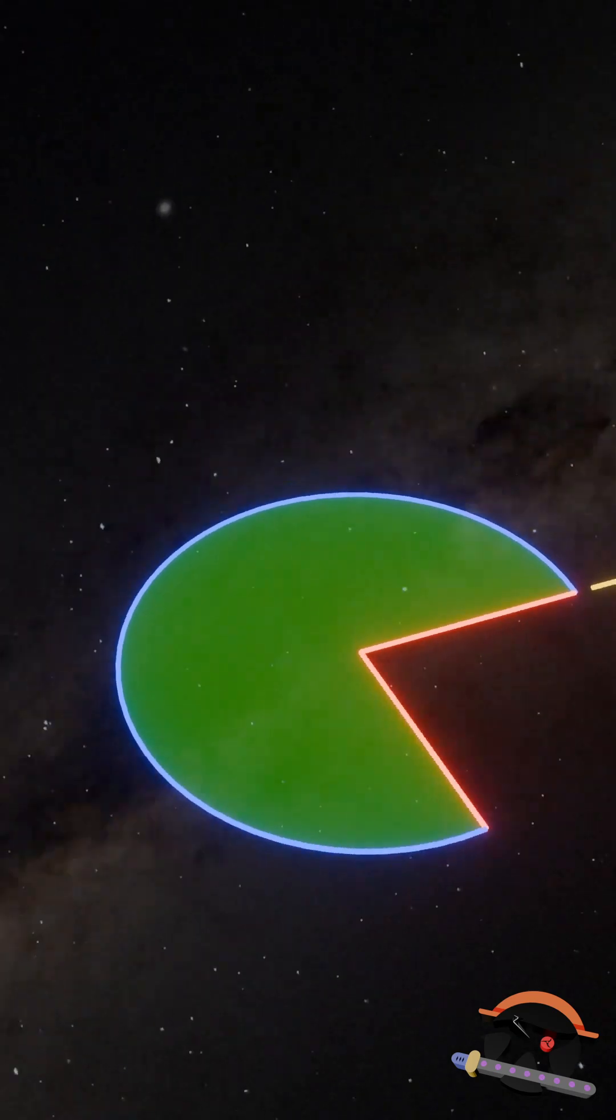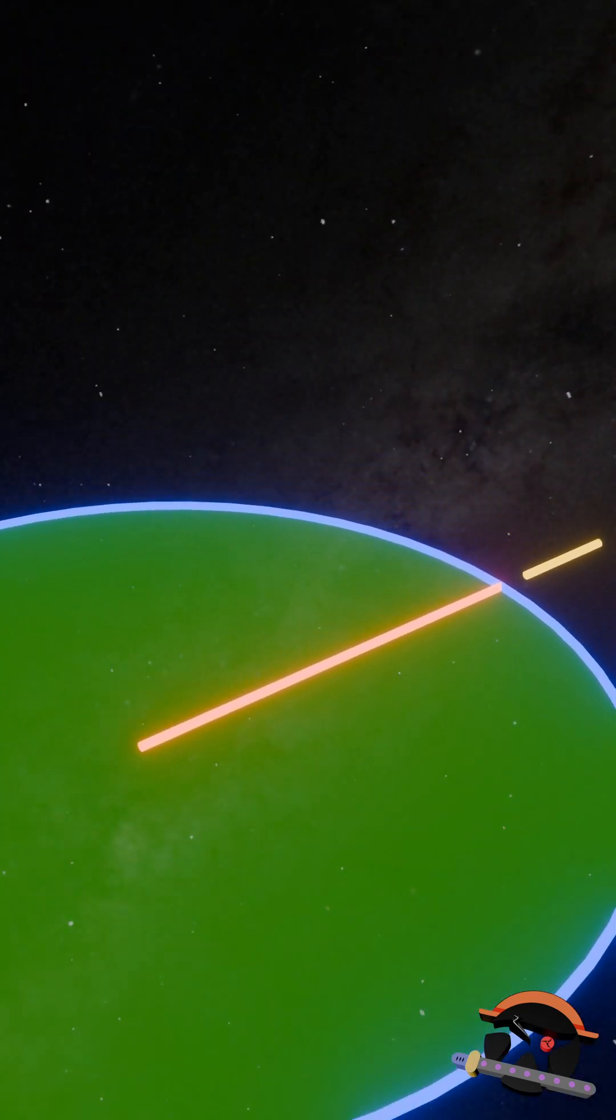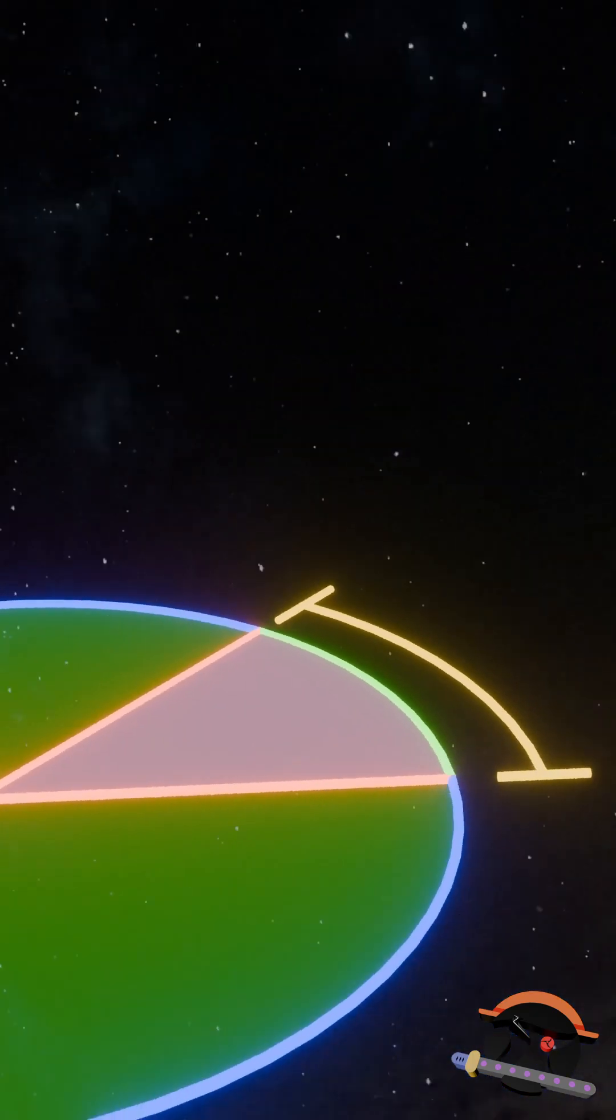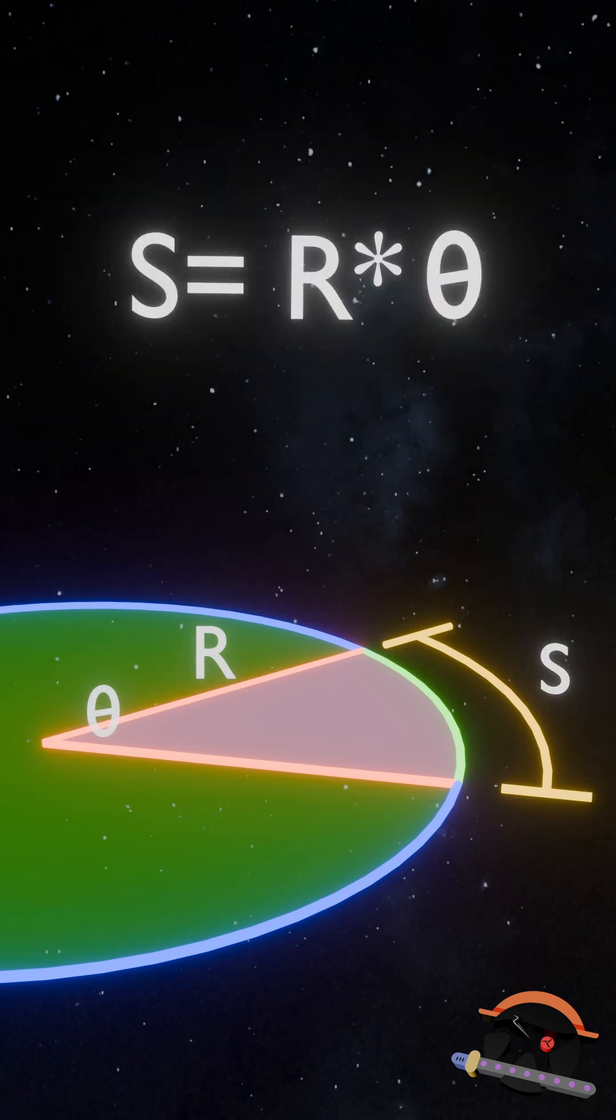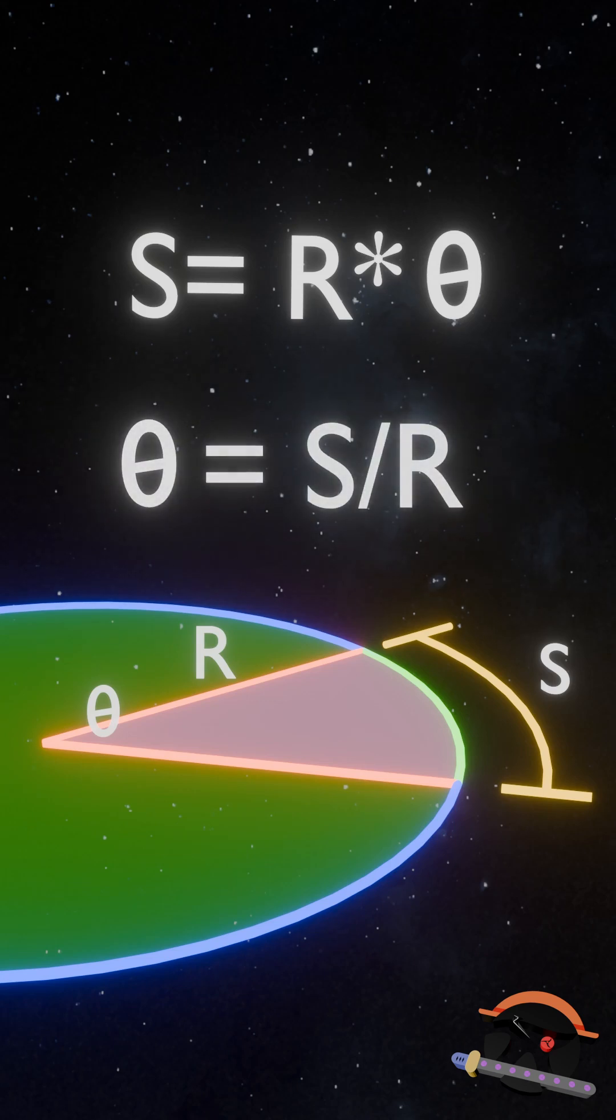You see, if you have a circle of some radius R and you walk some distance S on the circumference of the circle, the angle that you cover during that walk is given by the formula S equals R times theta. Thus, to know what angle you covered, you just rearrange the equation like this and you get the answer in radians.